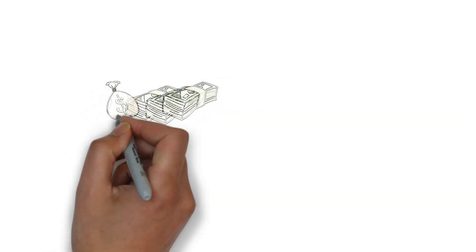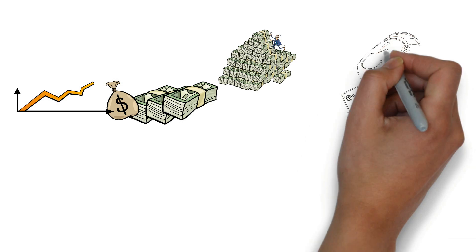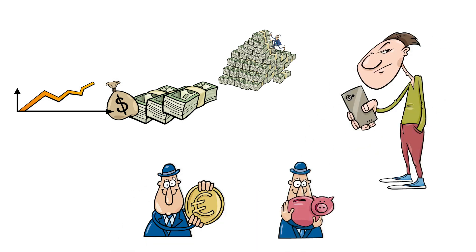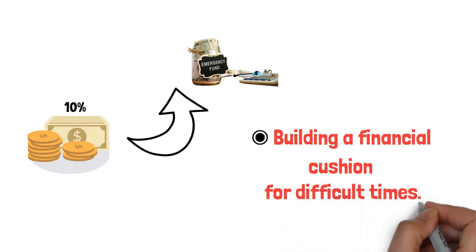If you aspire to achieve financial stability and surpass this situation, it's time to change your money habits. Start by shifting your focus from spending to saving. Allocate at least 10% of your income towards savings, building a financial cushion for difficult times.